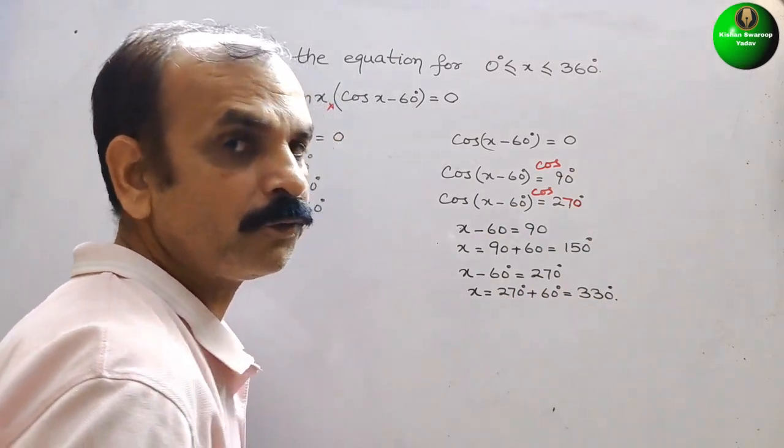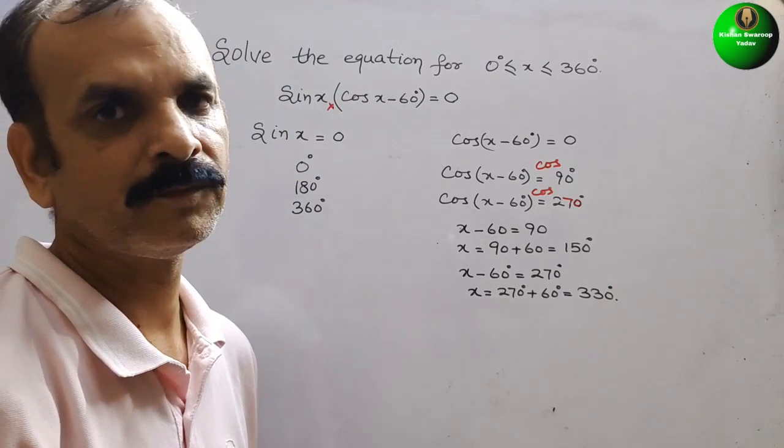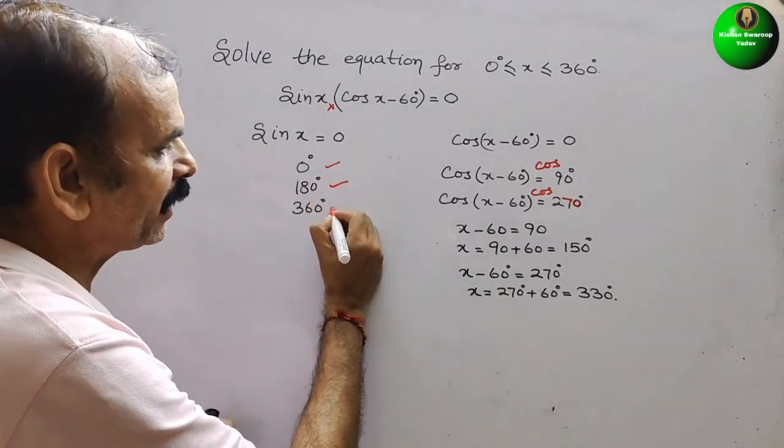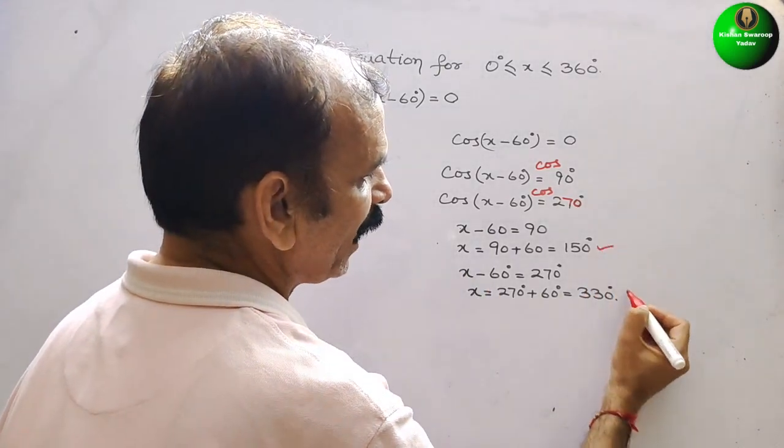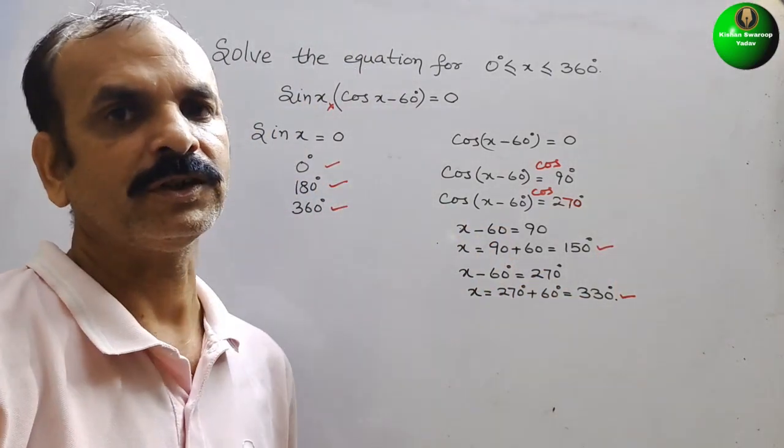So now for this type of questions, we will get many solutions. See that, first solution is 0, second is 180, third is 360. And here comes 150 and here comes your 330. So here we got 5 solutions.